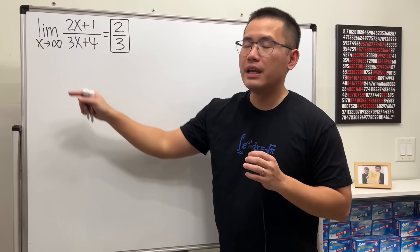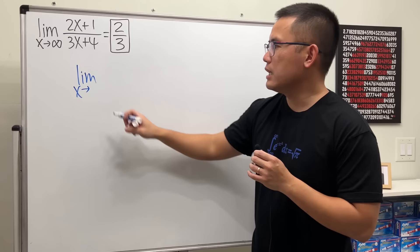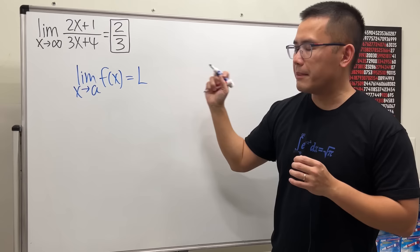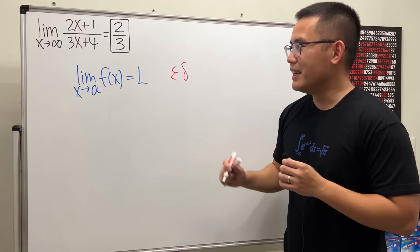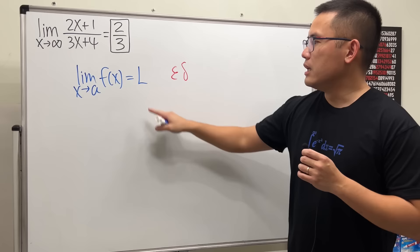Let me give you a quick review. When proving limits, we pretty much have these four versions. If x is approaching some number a and we have some function f(x) equal to some finite number L, we will be using the classic epsilon-delta definition. We have done a lot of examples on this already, so you can go check them out. If x is approaching a finite number a, we use delta. If the limit is finite, we use epsilon.